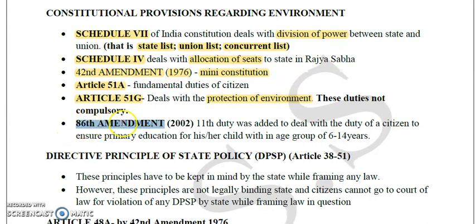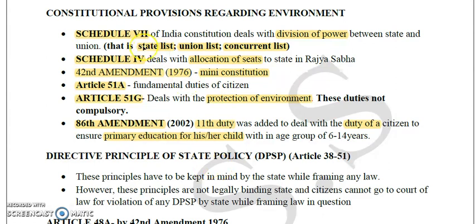The 86th Amendment, done in 2002, added the 11th duty to deal with the duty of a citizen to ensure primary education for their child between the ages of 6 to 14 years. Article 51G deals with the concept of protection of the environment, so please remember this article as it is mostly asked in the paper.